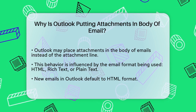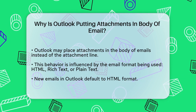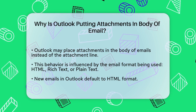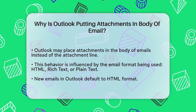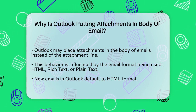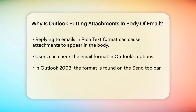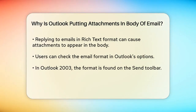Outlook supports several email formats: HTML, rich text, and plain text. When you send a new email through Outlook, it defaults to HTML format. However, if you're replying to an email that was sent in rich text format, things can get a bit different. In rich text emails, attachments tend to appear in the body of the email rather than as separate attachments.